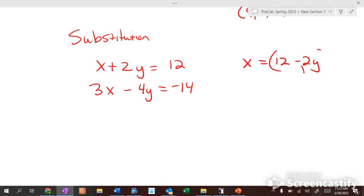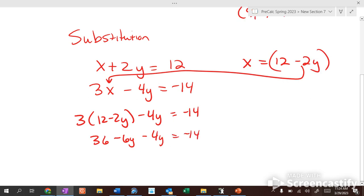So then we take the 12 minus 2y and plug it in for the x of the second equation. So 3 times (12 minus 2y) minus 4y equals negative 14. So if we distribute, 36 minus 6y minus 4y equals negative 14. Then what do we do to each side? Subtract 36. So negative 10y equals negative 50. So y must equal 5.